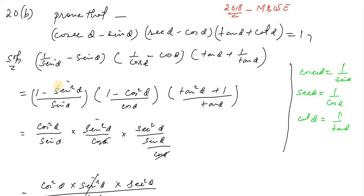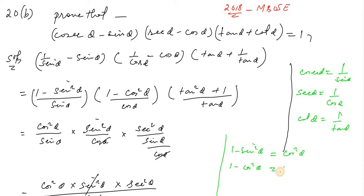It is simplified. One minus sin squared theta equals cos squared theta — that is the formula. And one minus cos squared theta equals sin squared theta. That gives us sec squared theta.